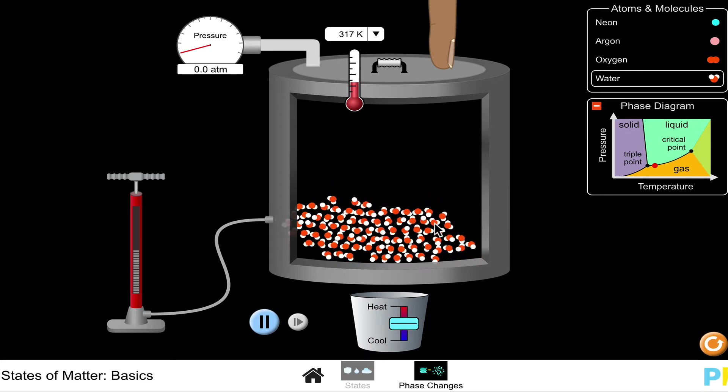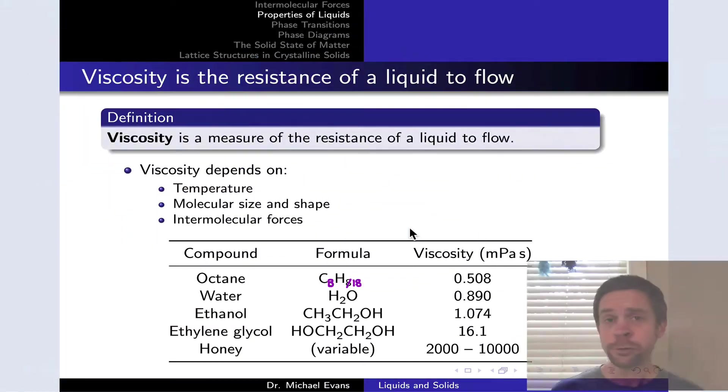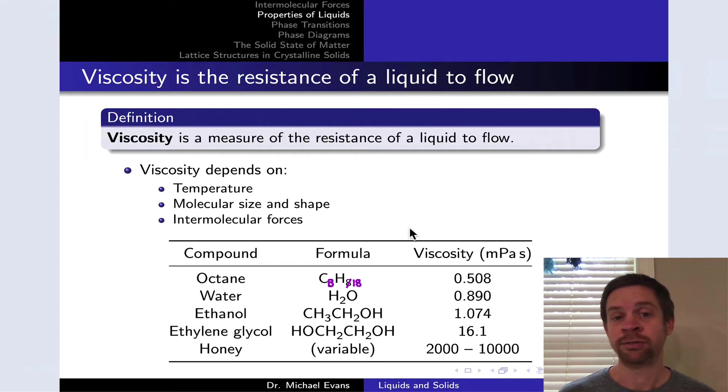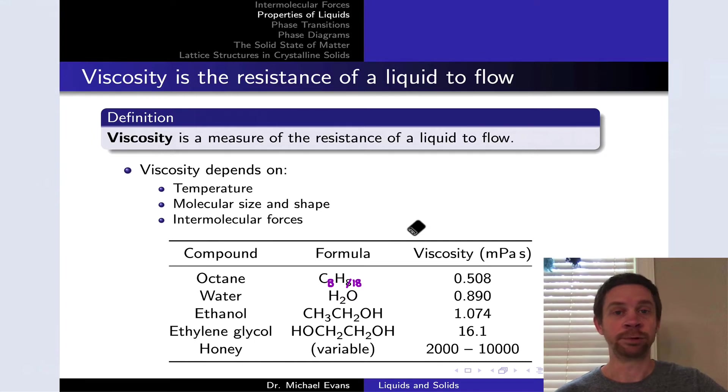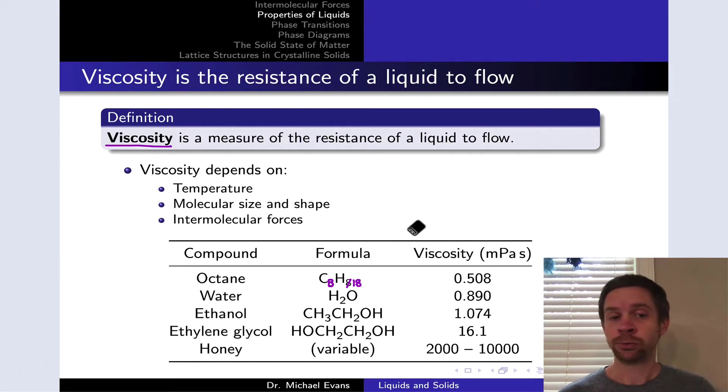The first property we're going to look at is called viscosity. This is a measure of the resistance of a liquid to flow. The harder it is for a liquid to flow, the greater the viscosity. Another way to think about it is the rate of flow or the time required for a certain type of flow to take place. More viscous liquids such as honey take longer to flow the same distance than liquids with lower viscosity like water.